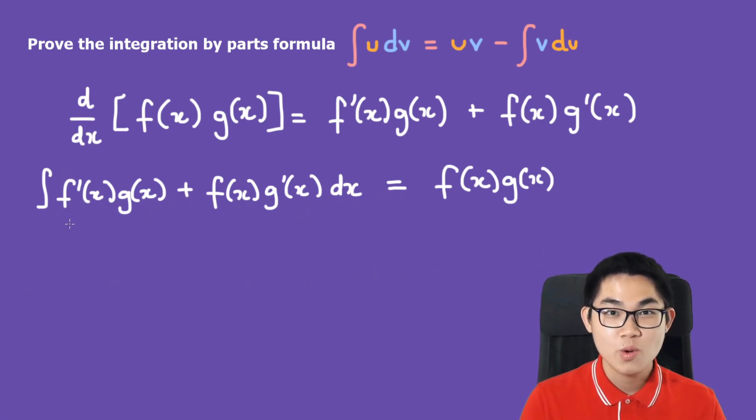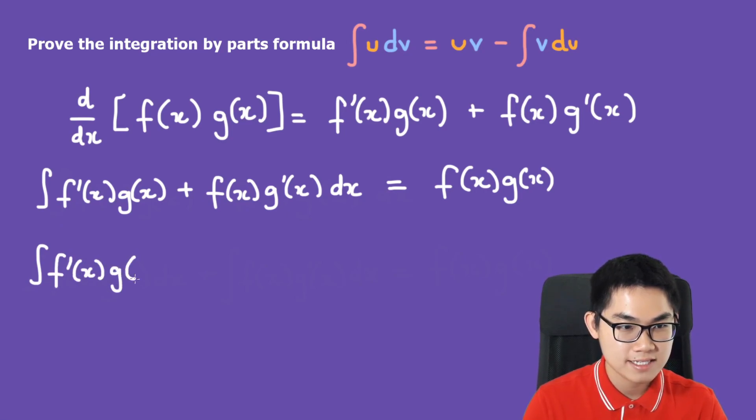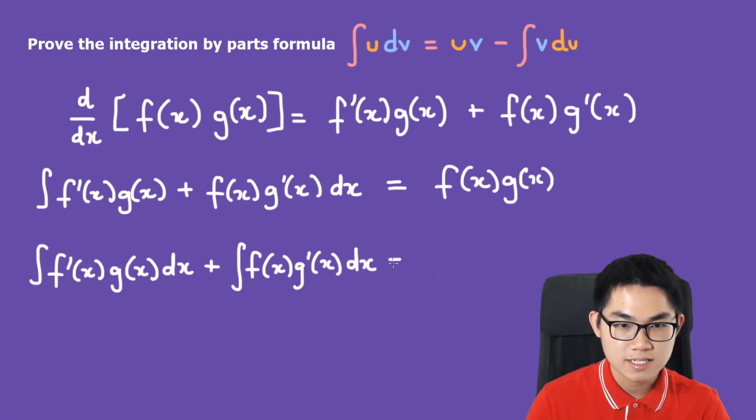Since there is a plus sign here, we can split the integral apart. So we have the integral of f'(x)g(x) dx plus the integral of f(x)g'(x) dx, and that's going to be equal to f(x)g(x).